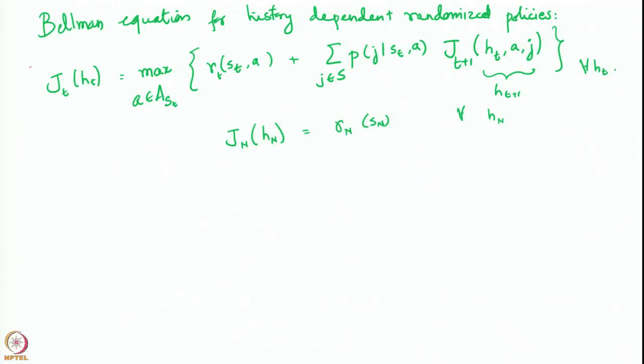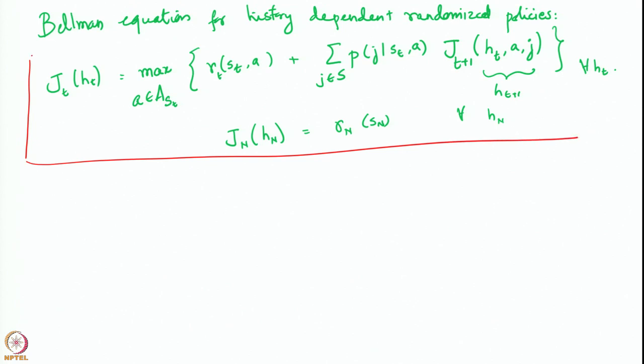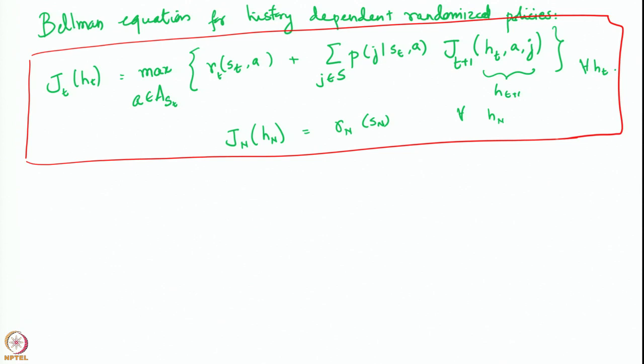Welcome back everyone. This equation that we wrote out was the Bellman equation for when you are considering history-dependent randomized policies. Let us look at this equation a little more closely.